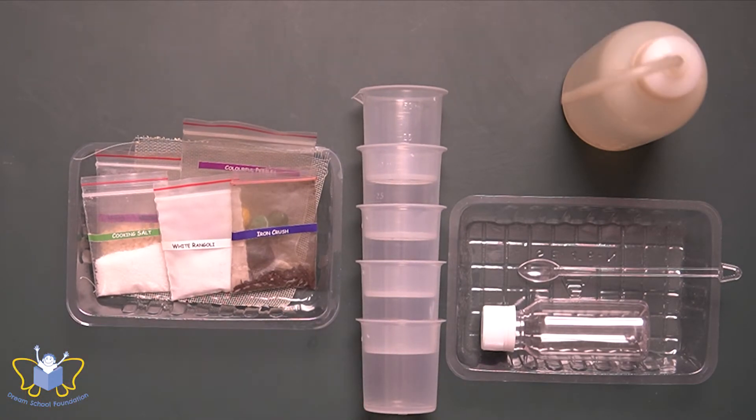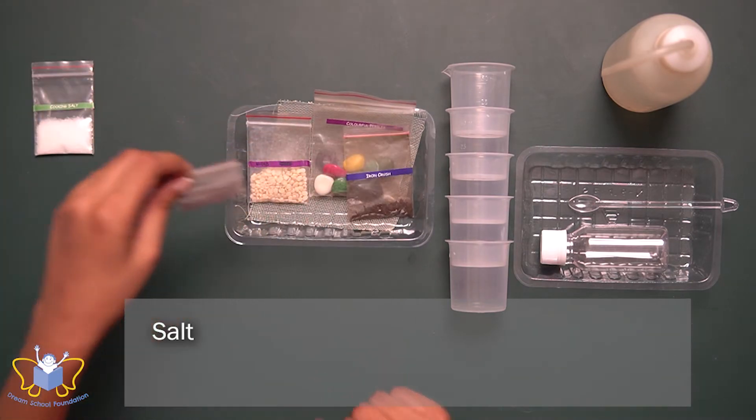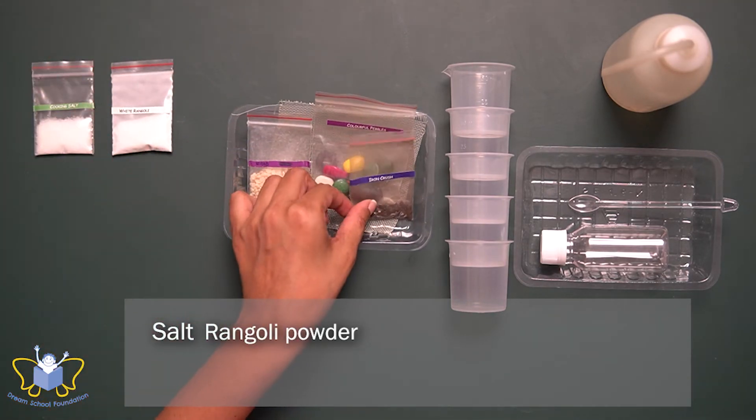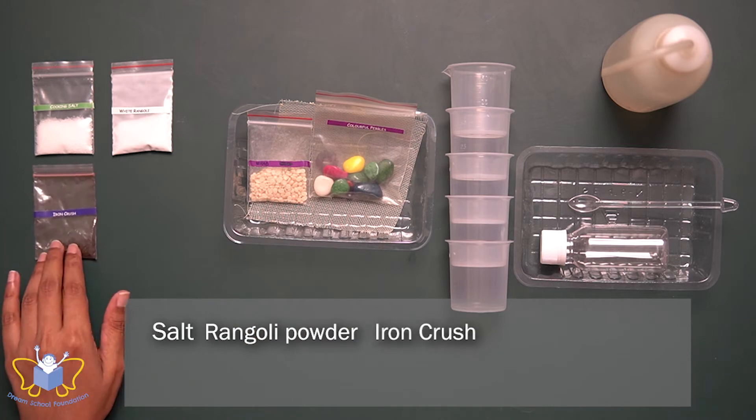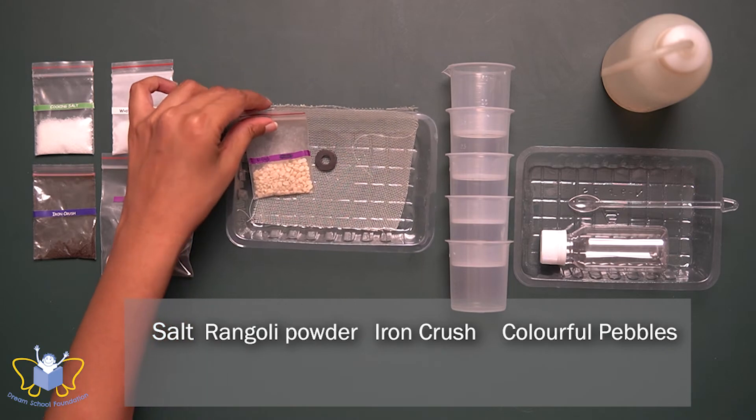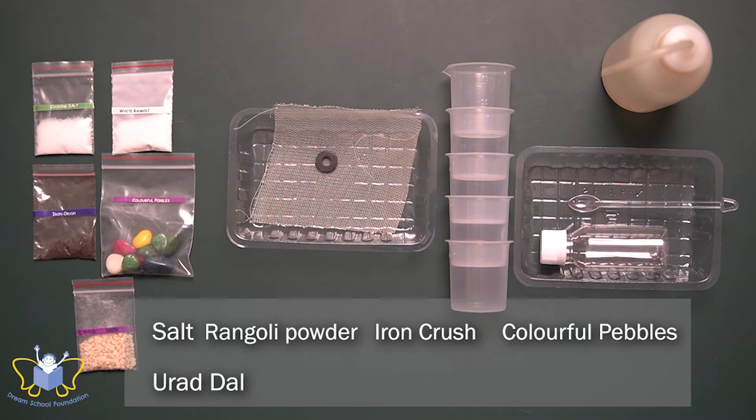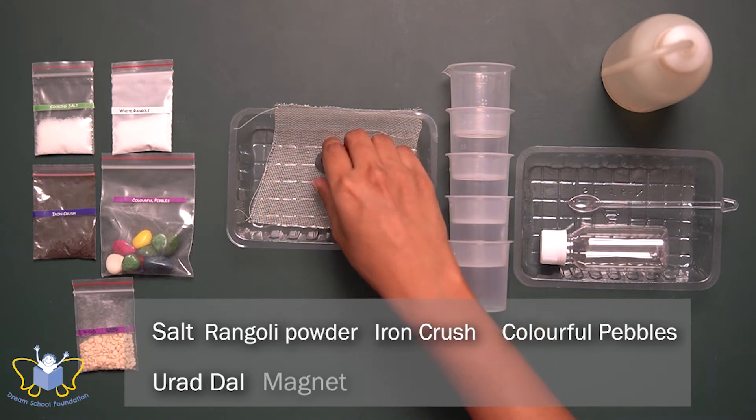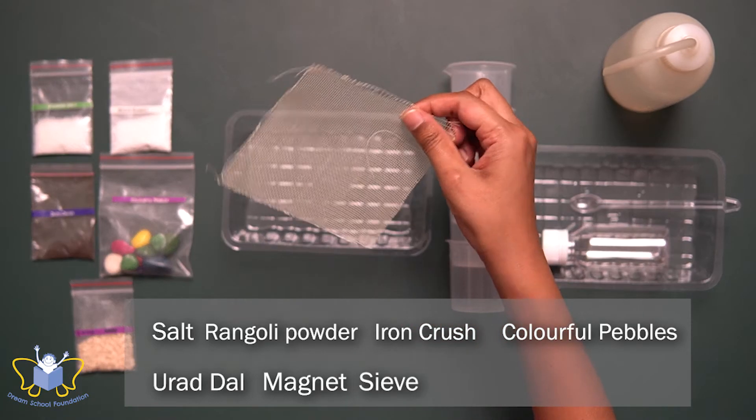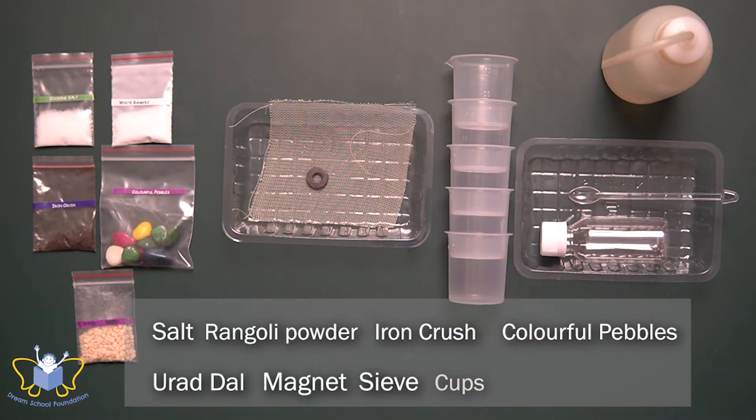So let's see what is in the kit. We have salt, rangoli powder, iron crush, colorful pebbles, and urad dal. We also have a magnet and a sieve. Along with it, we have different cups to help the process of separation.